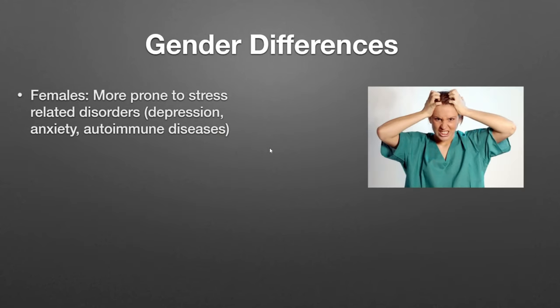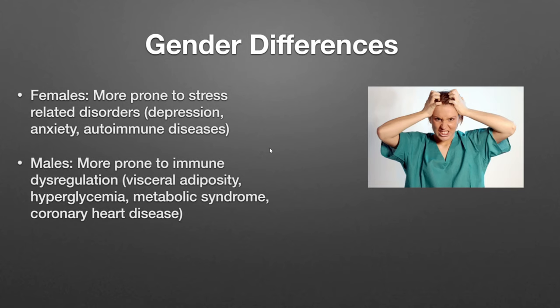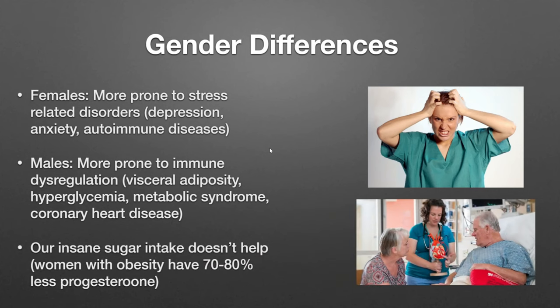What this means is females are going to be more prone to stress-related disorders like depression, anxiety, and autoimmune diseases. Males are going to have more immune dysregulation like metabolic syndrome. Because we are not the healthiest country in the world, females who are overweight will start to have some of the same metabolic syndrome symptoms that men would. When you are obese and female, the progesterone levels drop precipitously — and that's the one that actually helps protect against a lot of these things.